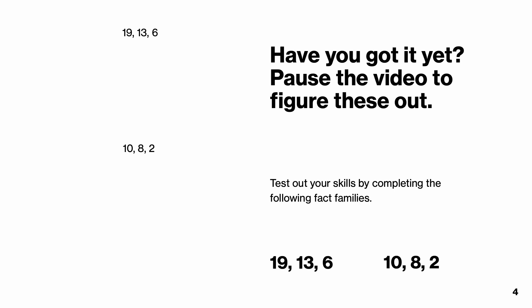Okay, did you get the answers correct? 6 plus 13 equals 19. 13 plus 6 equals 19. 19 minus 6 equals 13. And 19 minus 13 equals 6. That was the first fact family.